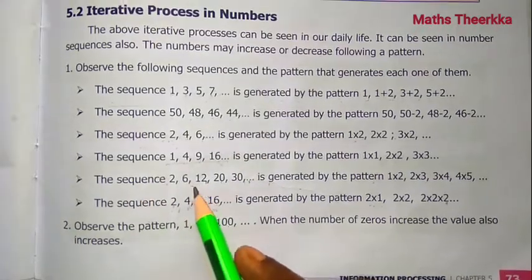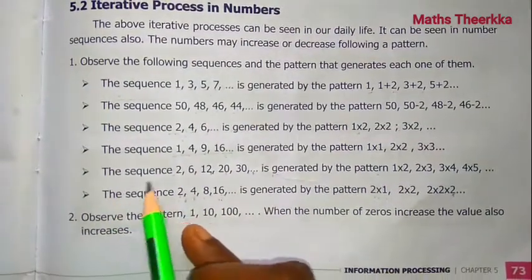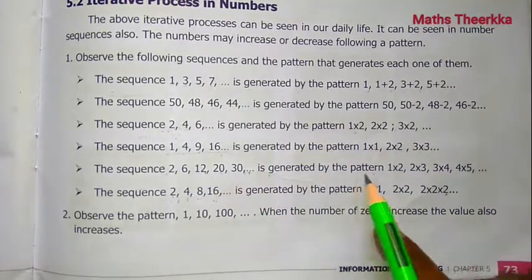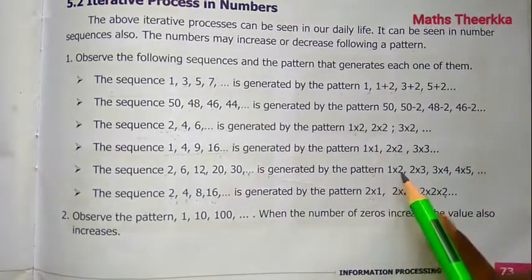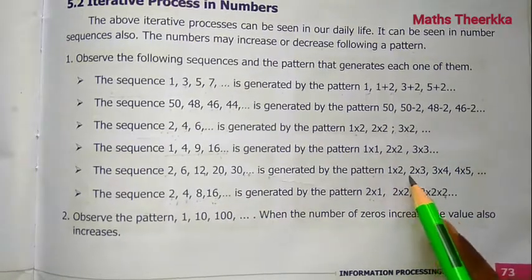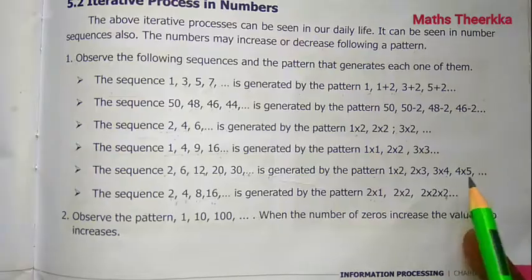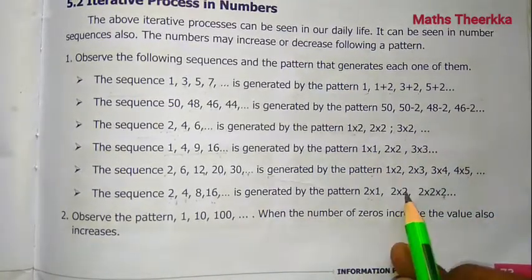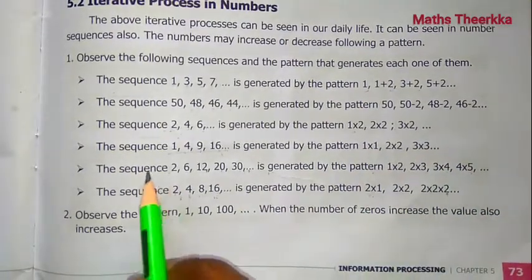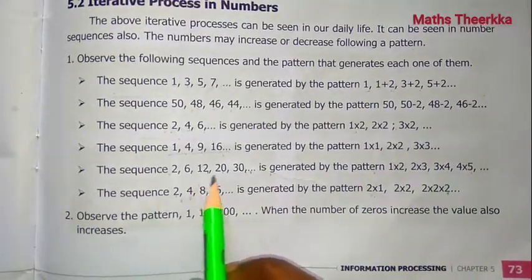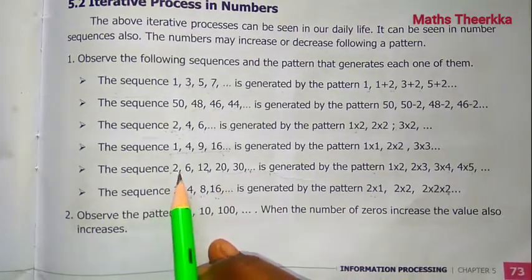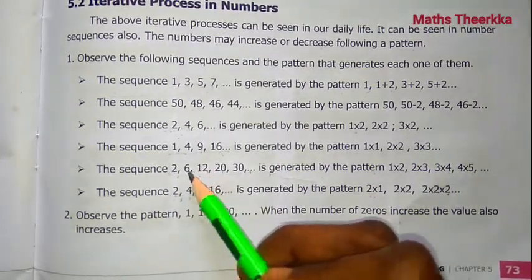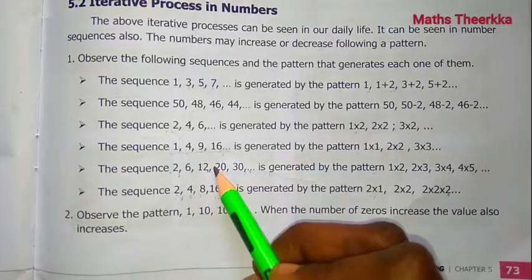Next, the sequence 2, 6, 12, 20, 30 is generated by the pattern: 1×2, 2×3, 3×4, 4×5. We multiply consecutive natural numbers together. So 1×2=2, 2×3=6, 3×4=12.